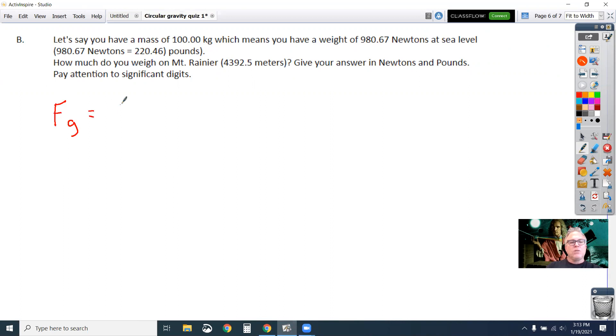F of G equals big G, which is a fudge factor slash conversion. And R squared is the radius squared or the distance between them. And so keep in mind, if you have objects like planets and maybe the moon, you don't measure from the surfaces. You measure from the center of mass, which on a circular planet is usually the center of the planet. So that's what this R squared means. How far apart things are.